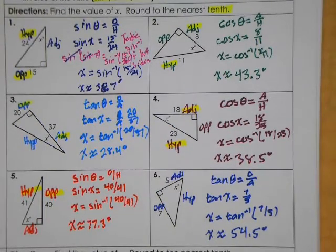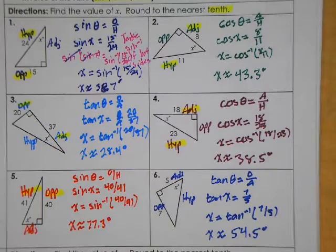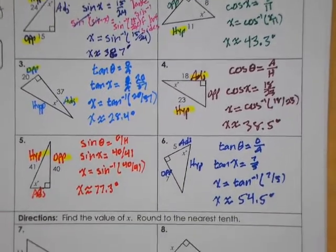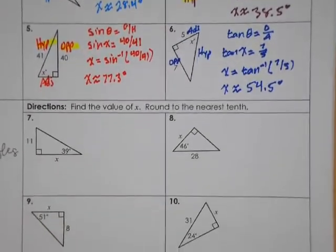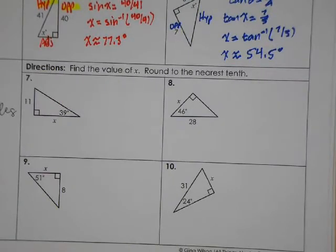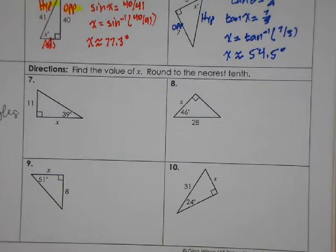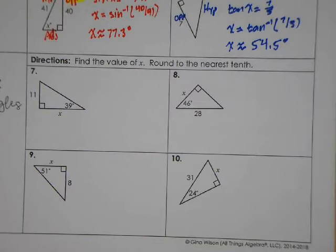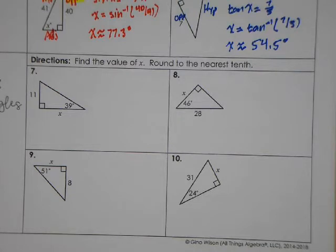From here on out, it's a matter of asking: am I looking for a side or am I looking for an angle? Whether you're finding a side or an angle, you still identify the correct ratio — sine, cosine, or tangent — based on what sides are given, and then find either the side or the angle. We're now looking at a mixture of problems for the next several questions, and I'll do a couple for you.